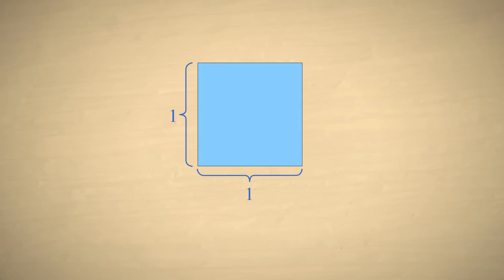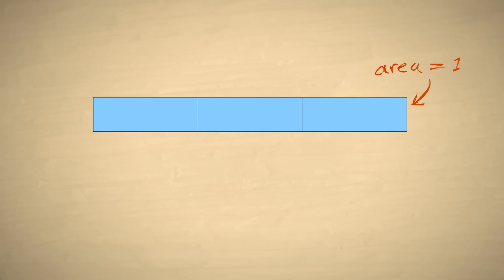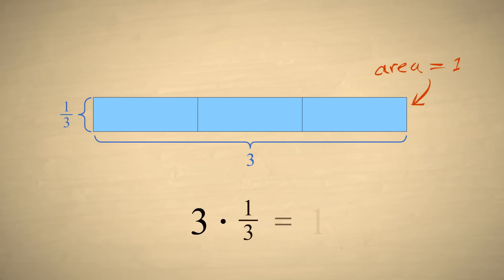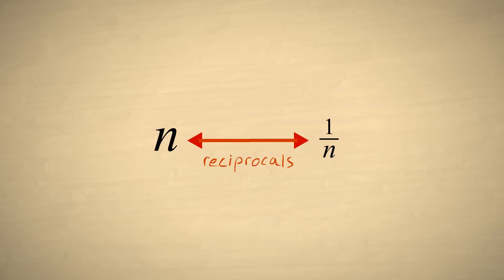Likewise, if we slice the square into three equal pieces, the area of the rectangle will still be one. However, its width will be three and its height will be one-third. Therefore, three times one-third is one, so three and one-third are reciprocals. From this process, we can see that any natural number n and the unit fraction one over n are reciprocals of each other.